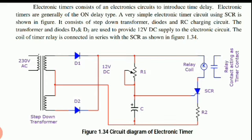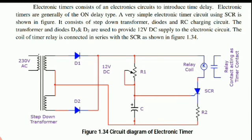The supply is 12 volt. The capacitor C is charged — the capacitor C is recommended to charge. We are getting the delay time. If we use the capacitor, we use it to set the timing.